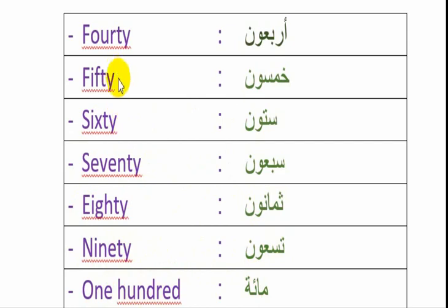هذه هي الأعداد بالإنجليزية - الأعداد الأعشار من 40 إلى 100. وبالنسبة لـ 41، 42، نضيف الأعداد التي رأيناها من قبل 1، 2، 3، 4، 5، 6، 7، 8، 9 في كل عدد من هذه الأعشار من 30 إلى 90. وبهذا سيكون عندك جميع الأعداد من 1 إلى 100.